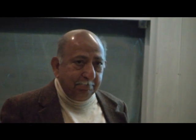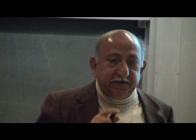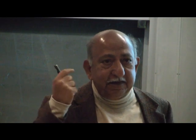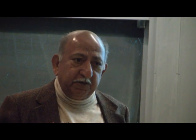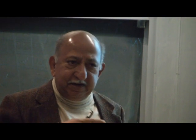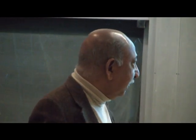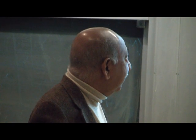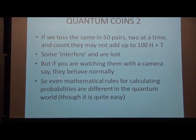If you're not observing, how do you know they don't sum up to 100? They don't sum up to 100 — if you let them go and there is no observation, at the end of the experiment you count them and some coins are missing. It's easy to calculate the probabilities: all you do is take the wave equation and the square of the absolute value. If you toss the same 50 pairs two at a time, some interfere and are lost. If you are watching them with a camera, they behave normally.